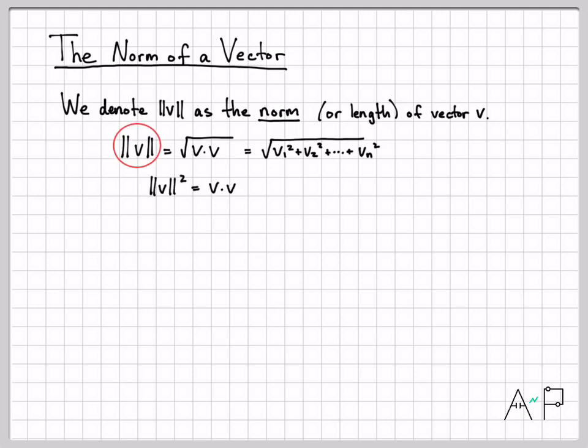Also, if we square the norm, that just turns into v dotted with itself. So sometimes in math, when you have the norm squared, that's equal to just v dotted with v. Let's do a quick example.